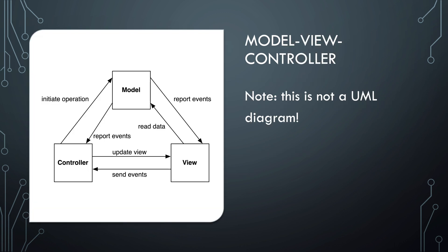Here's a diagram that shows how the different parts of MVC interact. The controller updates the view and the view sends events such as button presses to the controller to handle. The controller then initiates operations on the model. The view in turn reads data from the model to display. And the model reports events both directly to the view and to the controller.